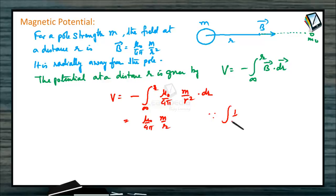Since integration of 1 by r square dr is equal to minus 1 by r, substituting here, we get this potential. If we substitute this value, this is the potential V.